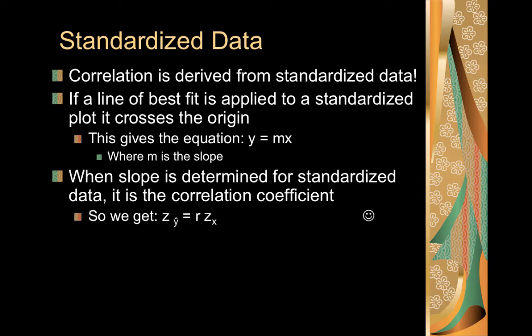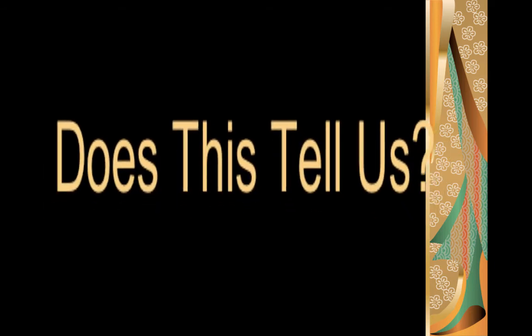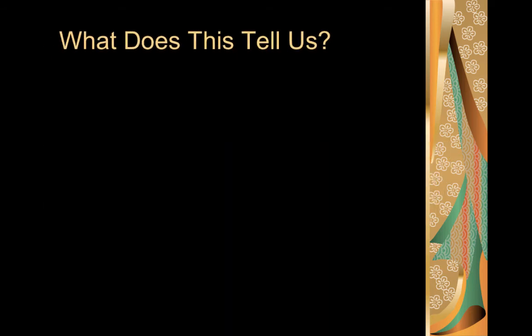We end up with our z-score for our y values equals r, because r is now our slope, times the z-score for our x values. And this gives us still a linear equation, but it's a linear equation based off of standardized values. So what does this really tell us, what does this really mean?